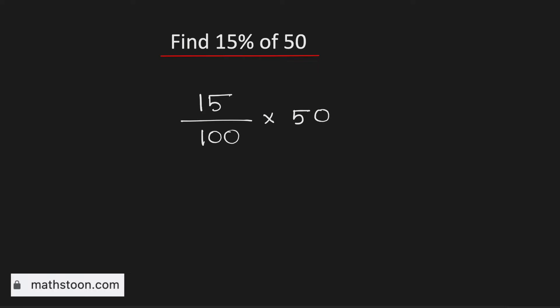Now we need to simplify it. We know that 50 goes into 100 by 2. Therefore, this is now equal to 15 over 2. Now if we simplify it and write it as a decimal, we get 7.5.